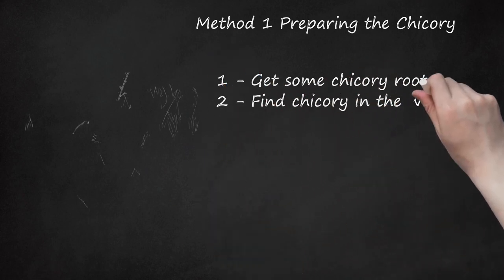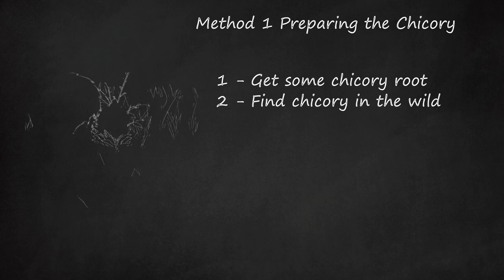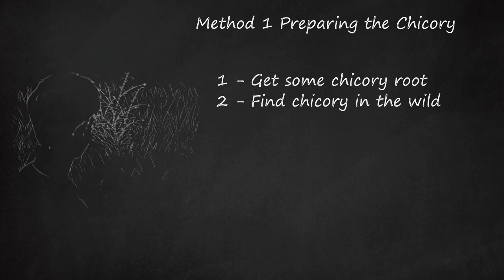Find chicory in the wild. Learn how to identify it so that you don't dig up the wrong plant. Chicory is a perennial herbaceous plant that grows in gravel or weedy fields, often beside roadways, across most of Canada and the US. The flowers are light blue or lavender and slightly ruffled at the ends of their petals.